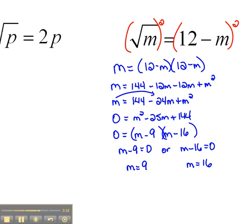And don't forget, we cannot get lazy about the checking. If we check this, let's check the 9 first. That would say the square root of 9 equals 12 minus 9. So the square root of 9 would be 3 equals 12 minus 9 is 3. Okay, that one checks. So m equals 9 is an answer to that equation.